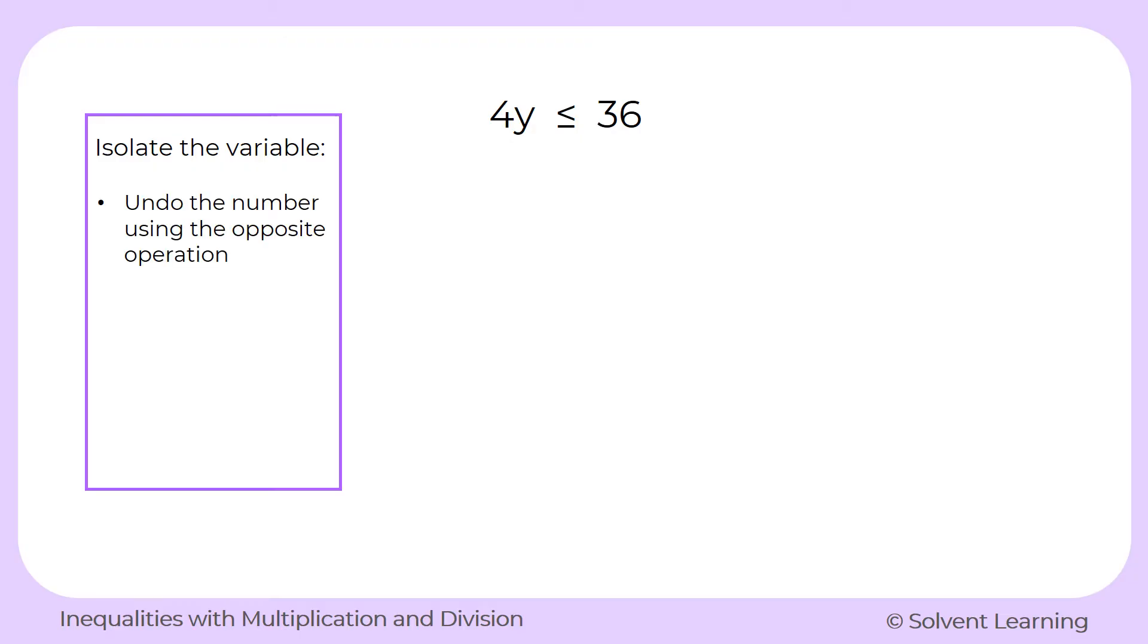And to do that, we'll have to undo the number that's with it using the opposite operation. And whatever we do to that side, we have to do the same thing on both sides of the inequality. And once we do have our variable y by itself, we'll need to check the inequality symbol to make sure that we do have the correct symbol in our answer.